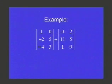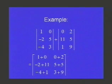Looking at another example, here we have two 3 by 2 matrices. There are 3 rows and 2 columns. Again, to add these, we add corresponding entries.